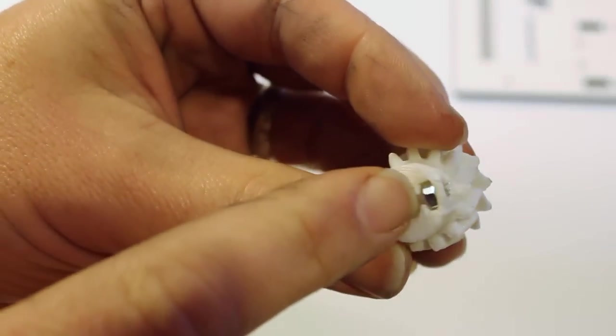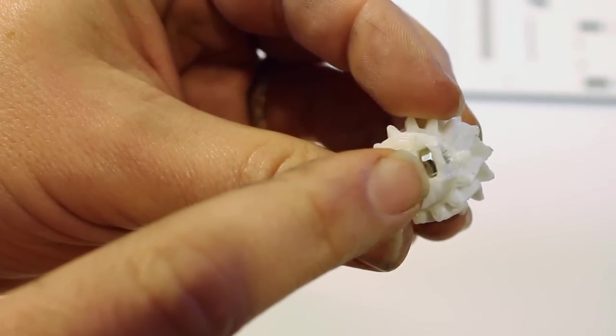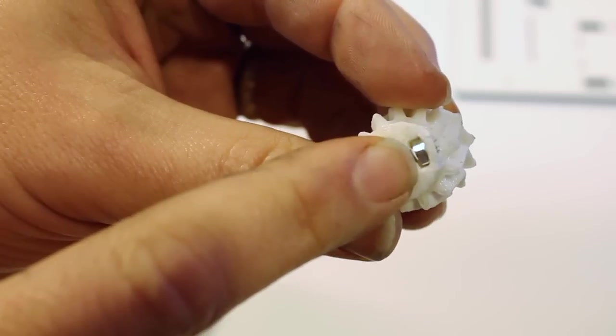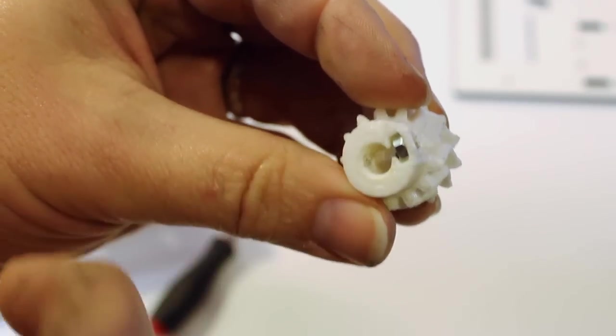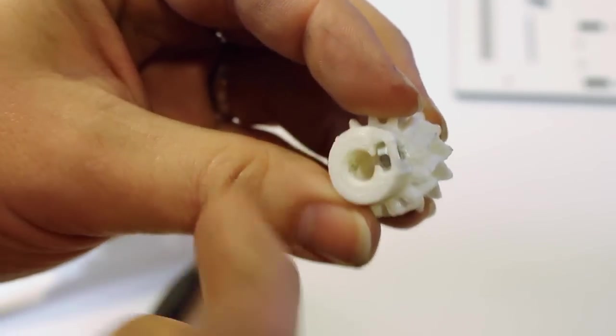Get the printed drive gear and slide a hex nut into the slot at the end of the gear. You might have to trim it out a little bit with a knife to get it in there, but it should fit.